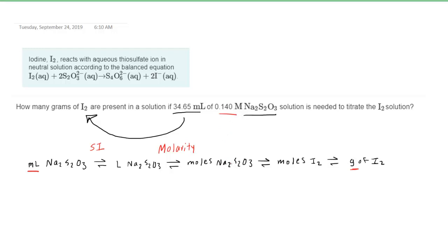You'll notice that the molarity of Na2S2O3 was given in the question. Then, to convert from moles of Na2S2O3 into moles of iodine, you're going to use the coefficients from the balanced reaction. And of course, the balanced reaction was given in the question. And finally, to convert from moles of iodine into grams of iodine, you're going to use the molar mass, which we will obtain by referring to the periodic table.